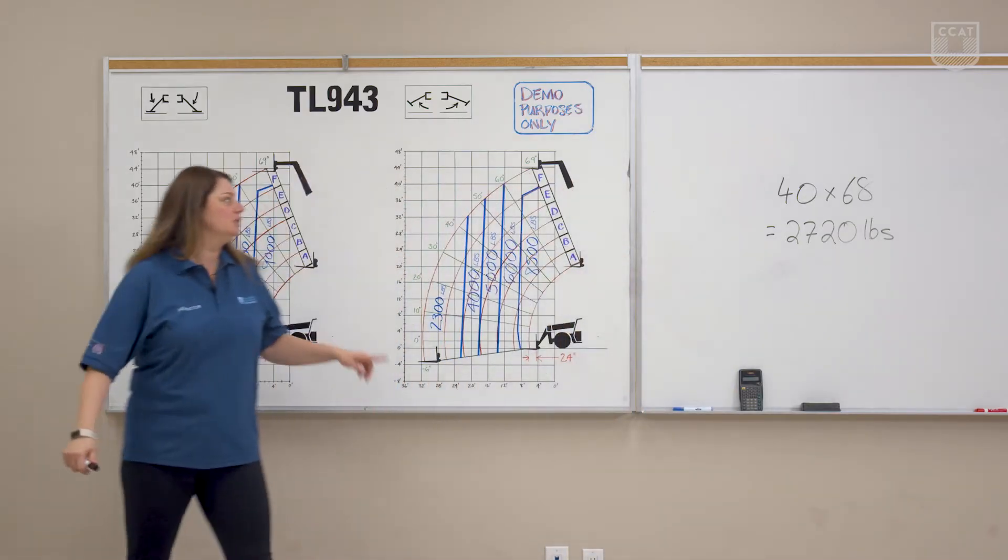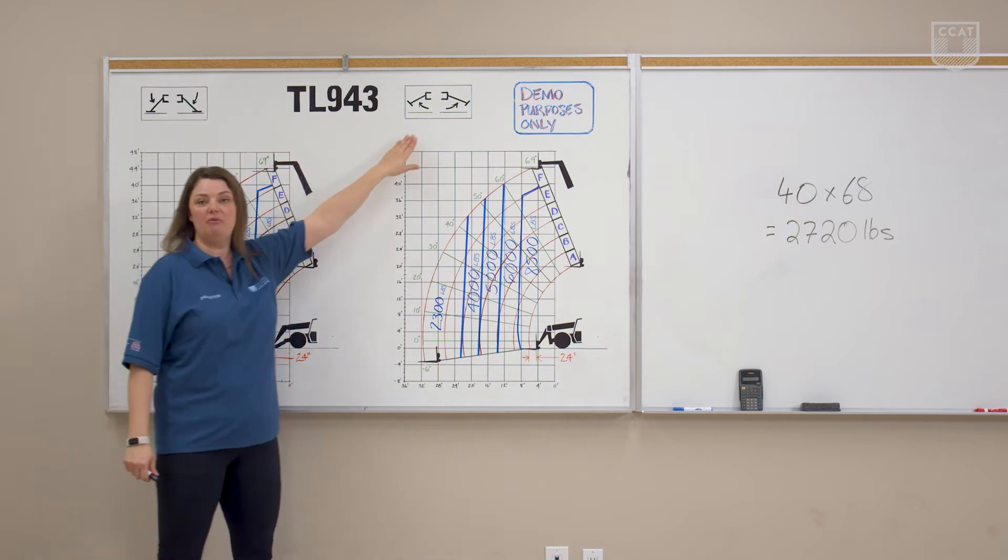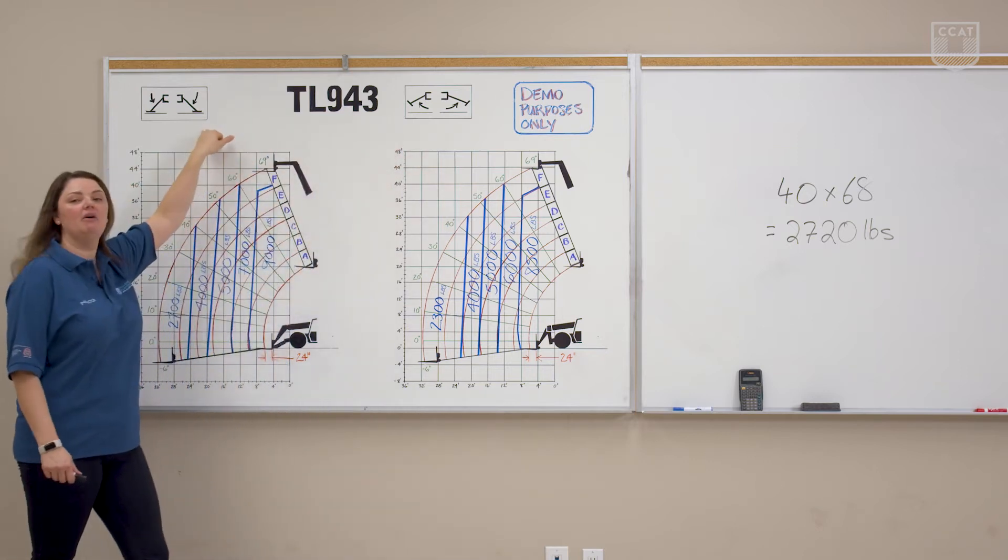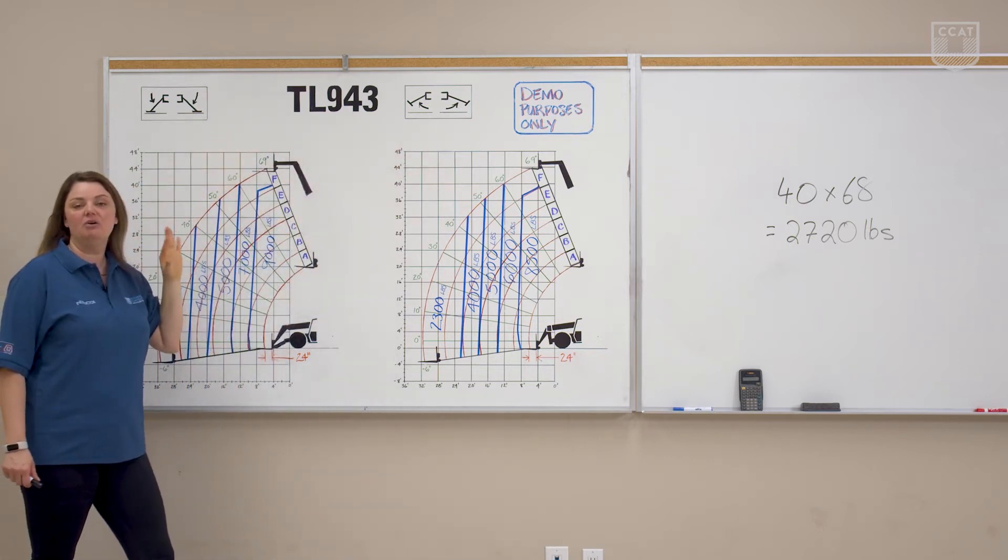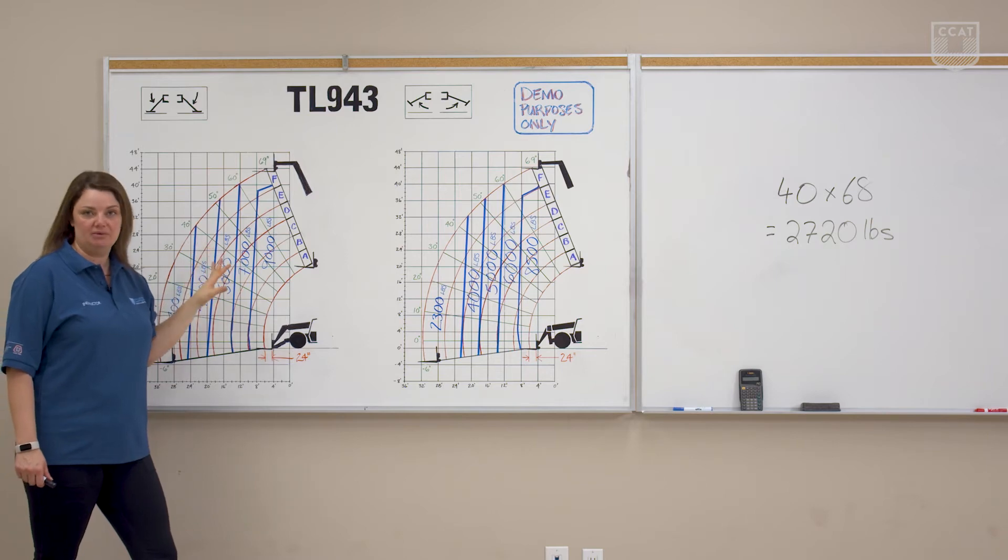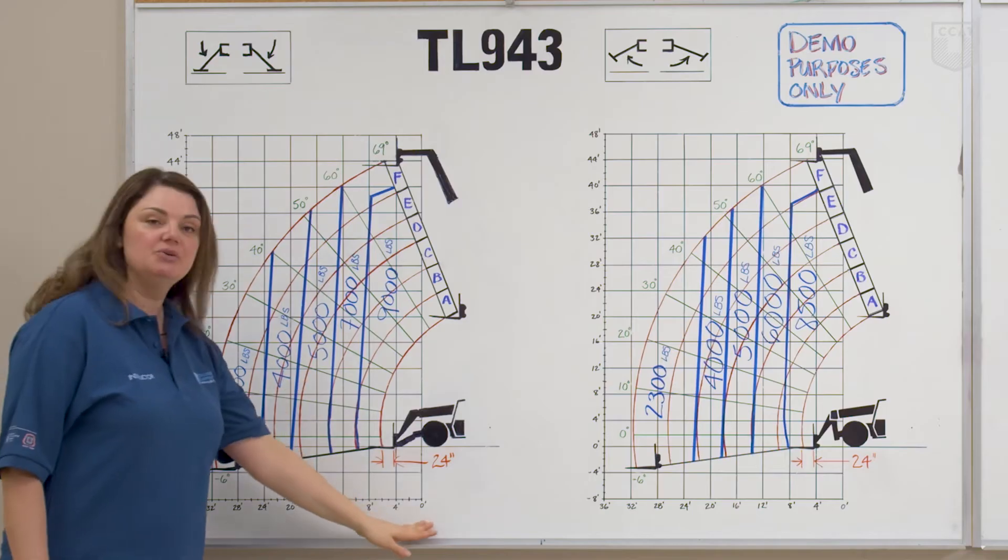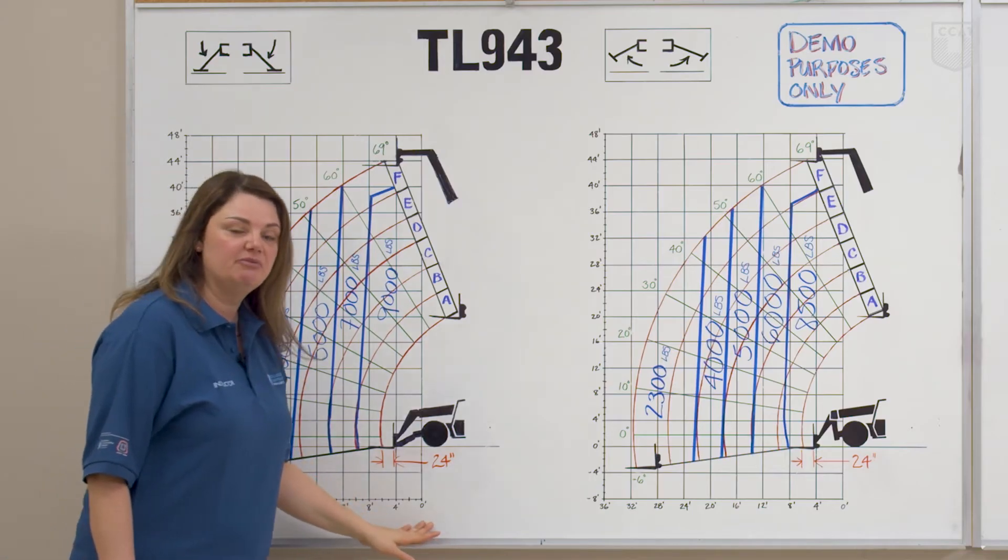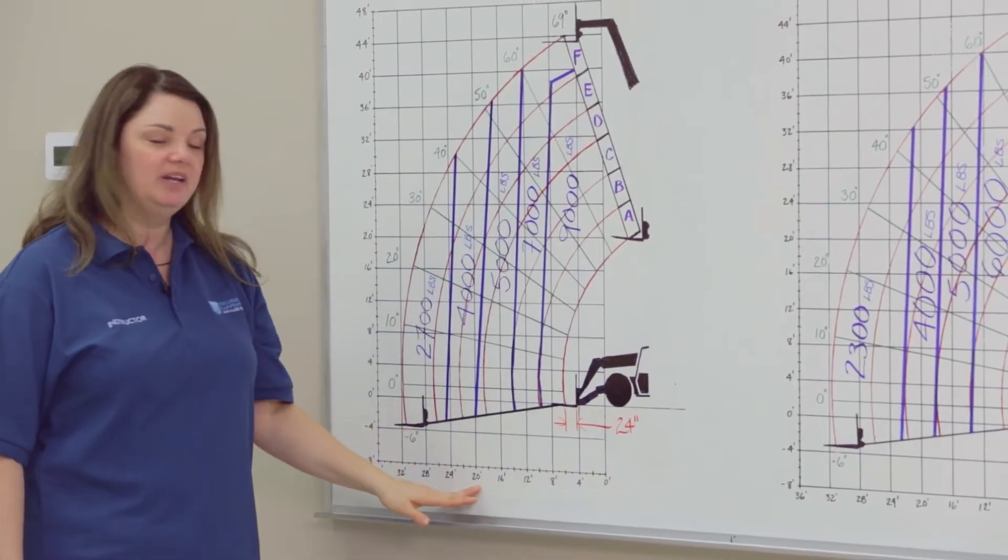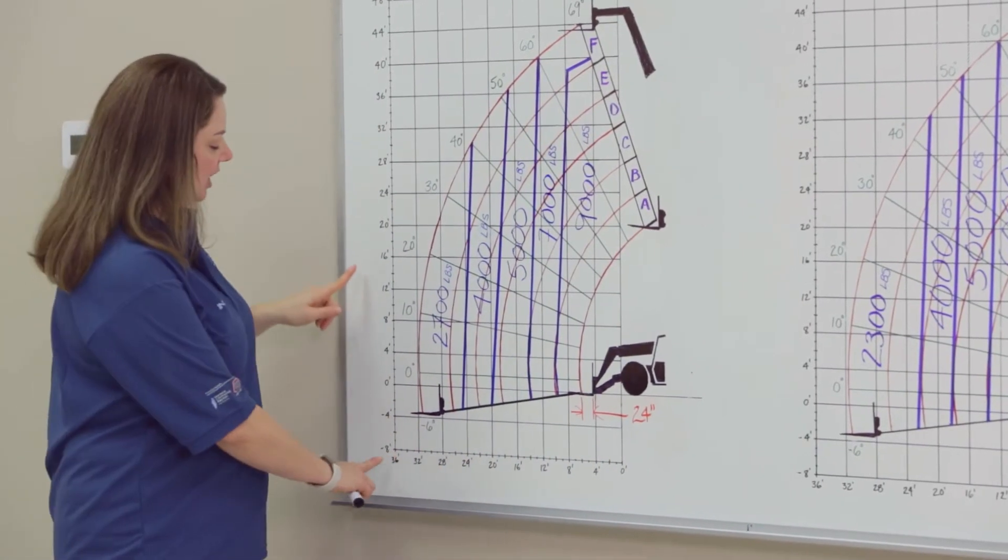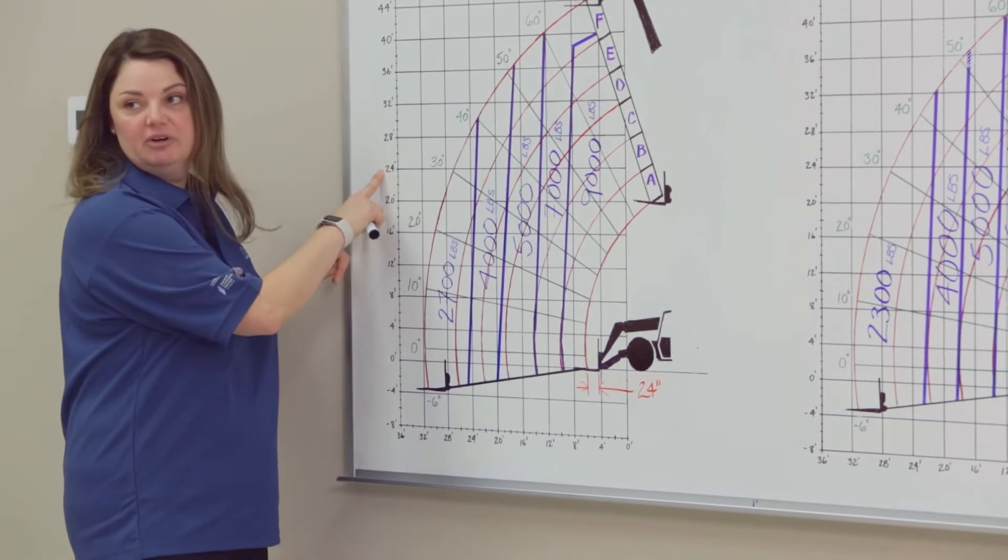You'll notice that we have two load charts here. We have one with our outriggers up, and one with our outriggers down. In our scenario, we're going to be working with our outriggers down. So what we're going to do is use those numbers that we said before. We're going to be looking that it goes 20 feet worth of reach, and we're going to be looking that we go 24 feet high.